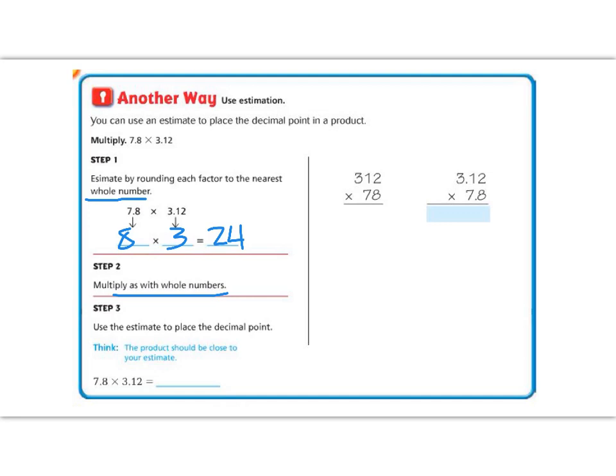So let's go ahead and multiply. 2 times 8 is 16, 8 times 1 is 8 plus 1 is 9, 8 times 3 is 24. And we're going to add our magic 0 and multiply by the 7. 7 times 2 is 14, carry the 1, 7 times 1 is 7 plus 1 is 8, 7 times 3 is 21.